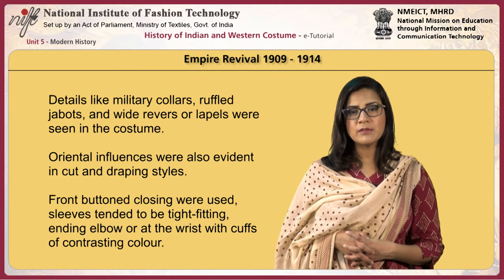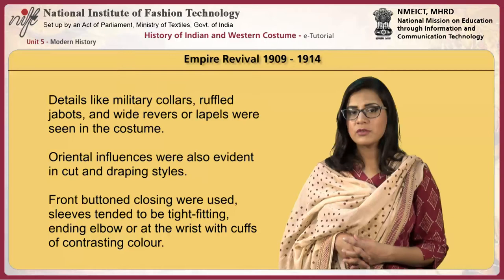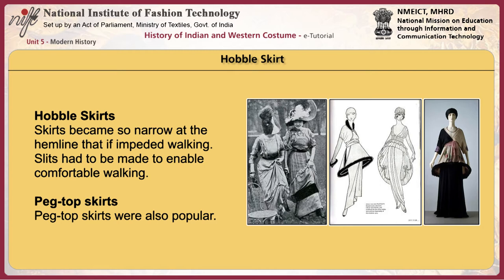Oriental influences were also evident in cut and draping styles. Front-buttoned closings were used. Sleeves tended to be tight-fitting, ending below or at the wrist with cuffs of contrasting colour. Skirts became so narrow at the hemline that they impeded walking — these skirts were called hobble skirts. Slits had to be made to enable comfortable walking. Peg top skirts were also popular. Tunics were worn over underskirts. Paul Poiret designed exotic tunic styles like the minaret tunic.